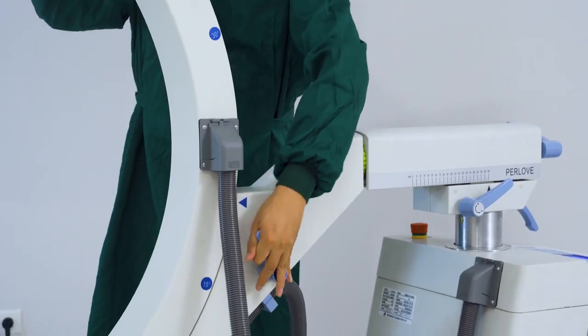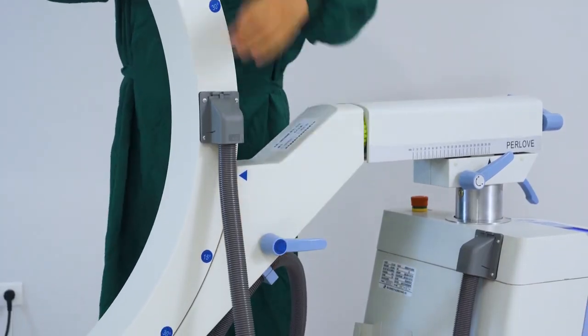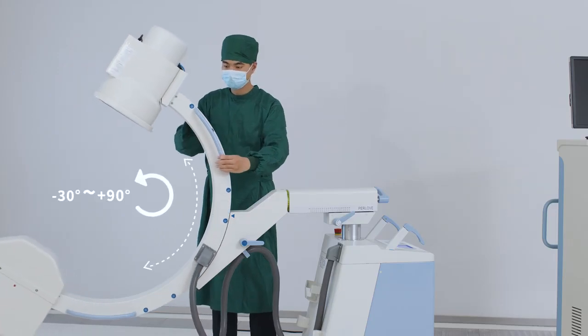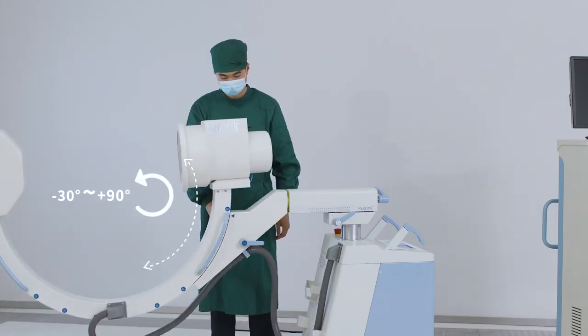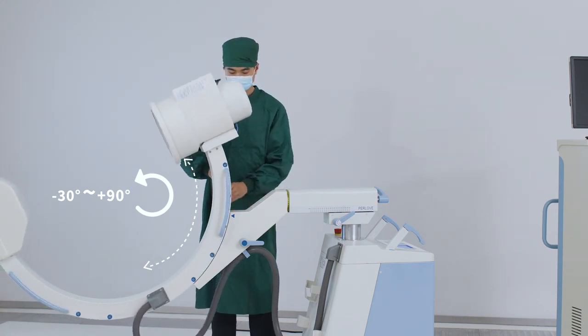When you grab the handlebar on the both sides of the frame, the C-Arm can be sliding along the frame from minus 30 degrees to positive 90 degrees.